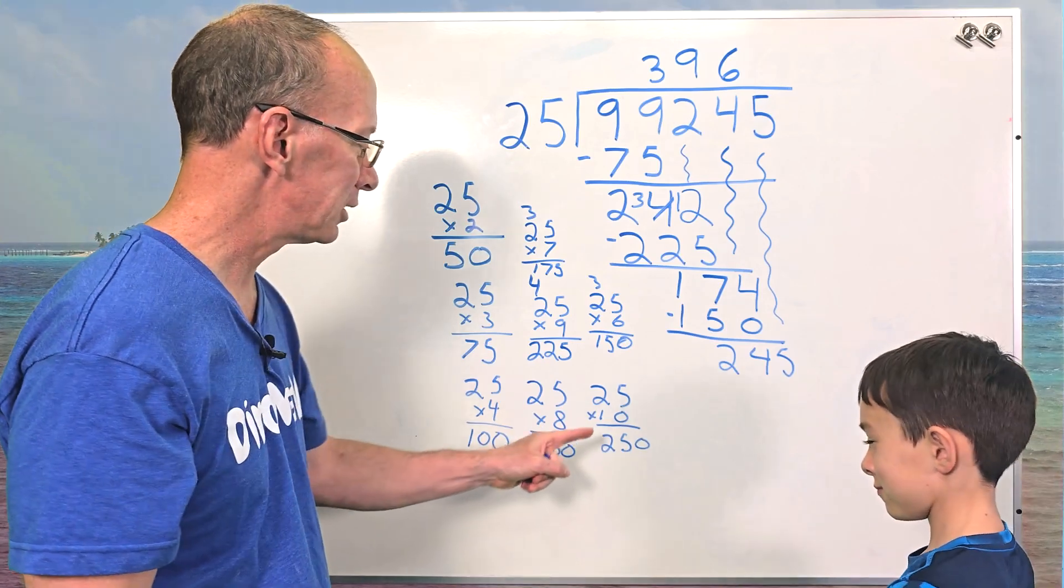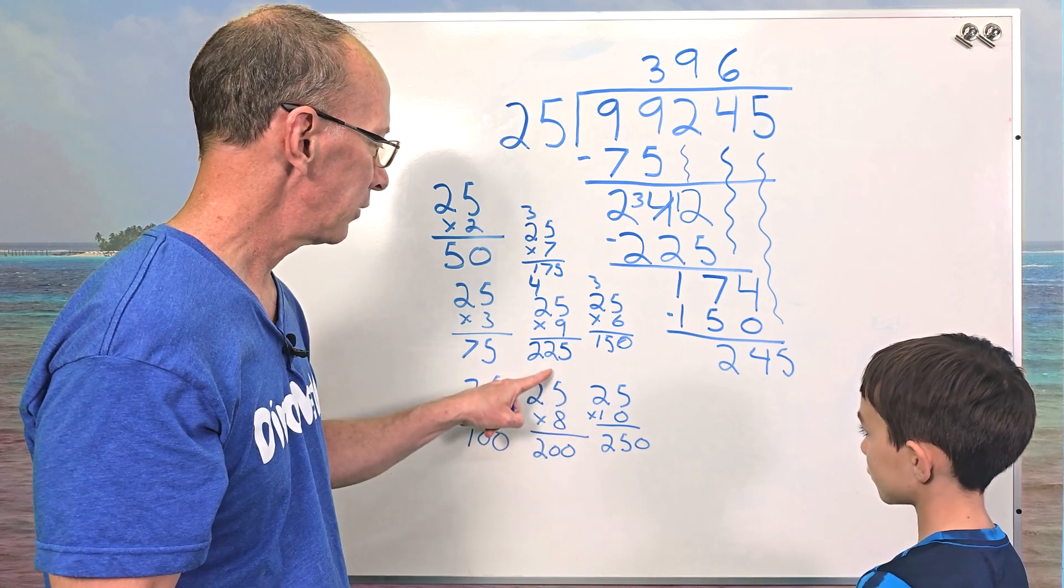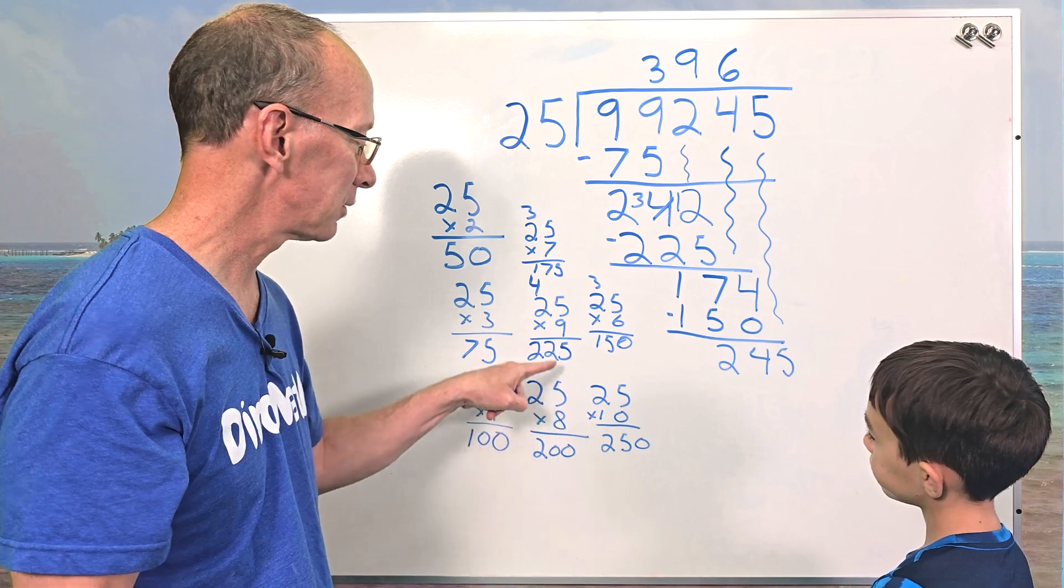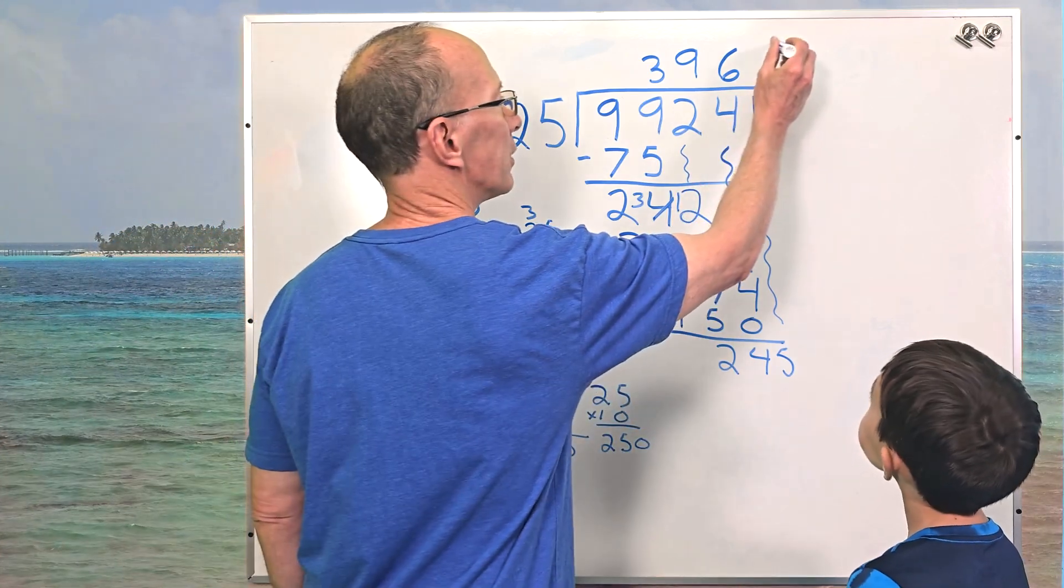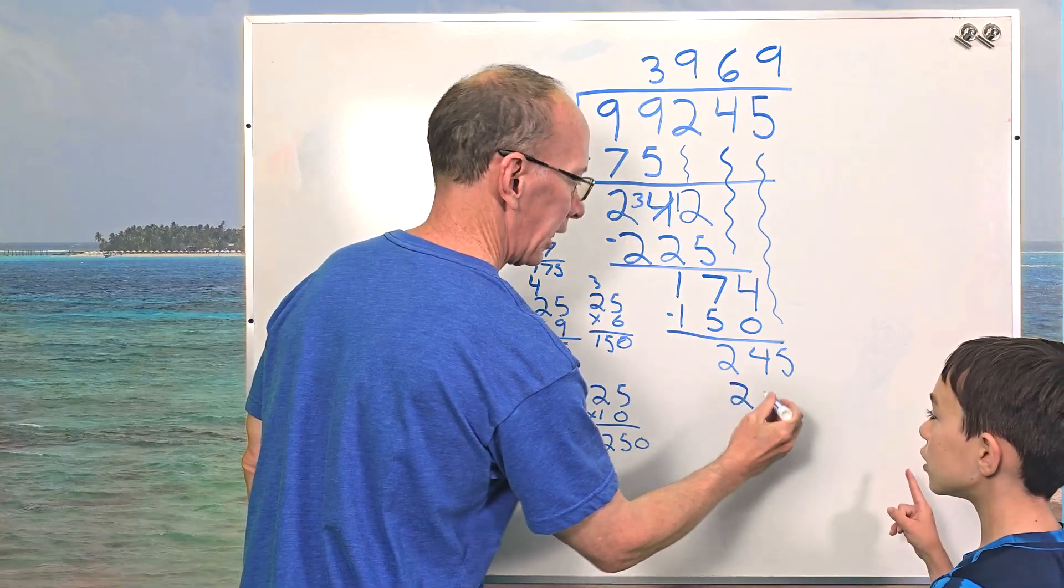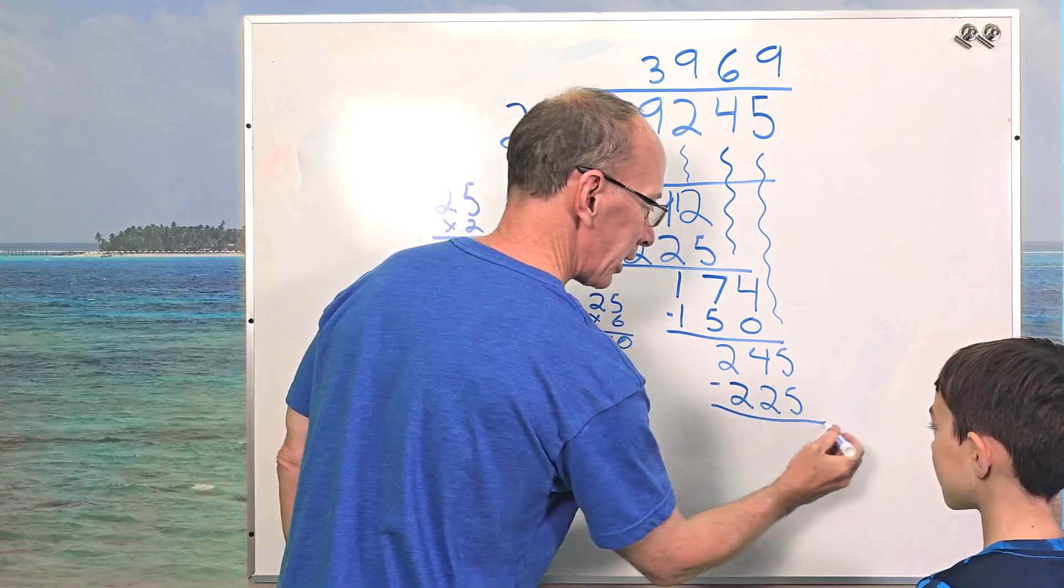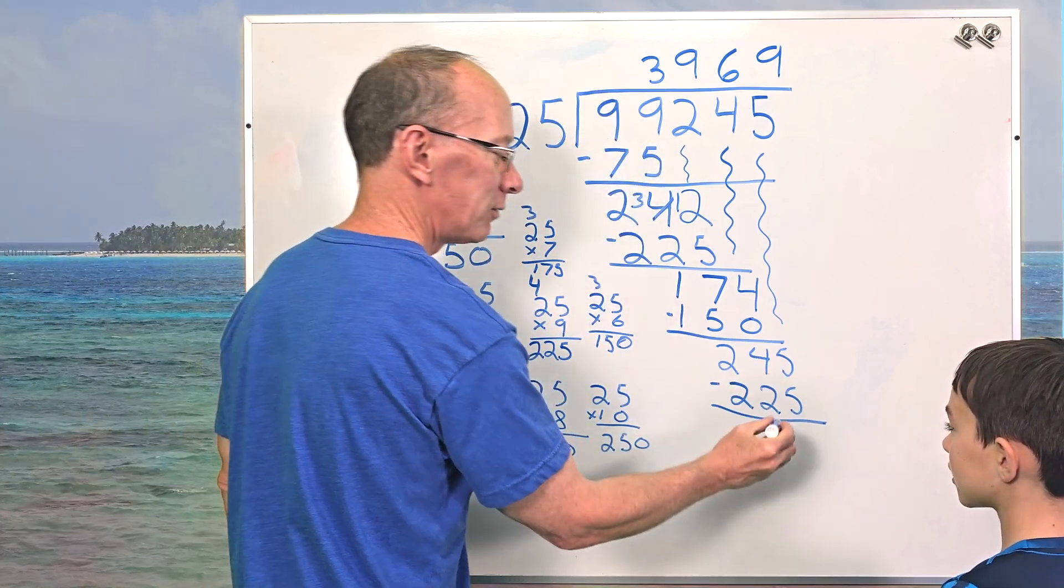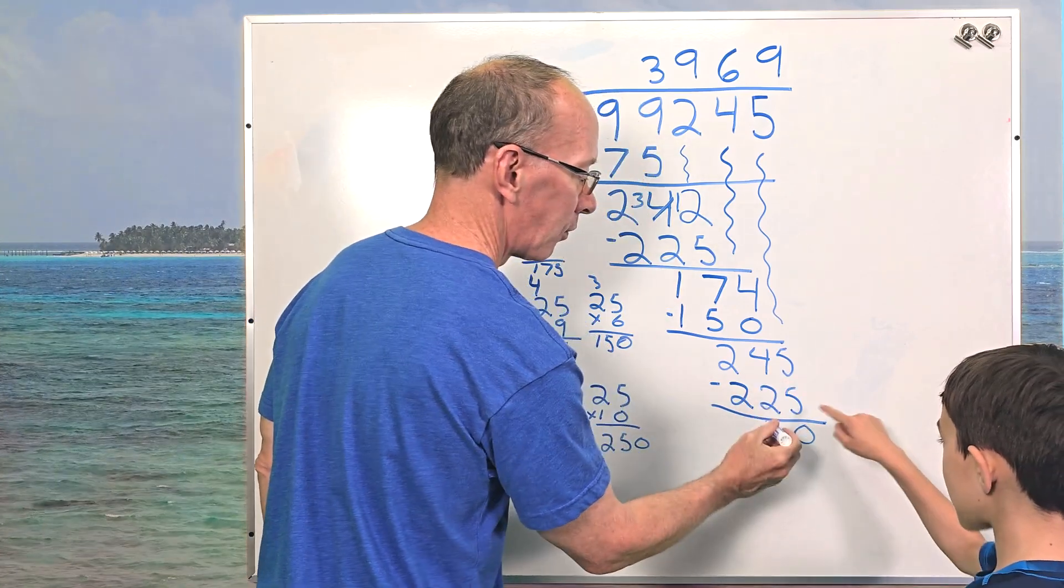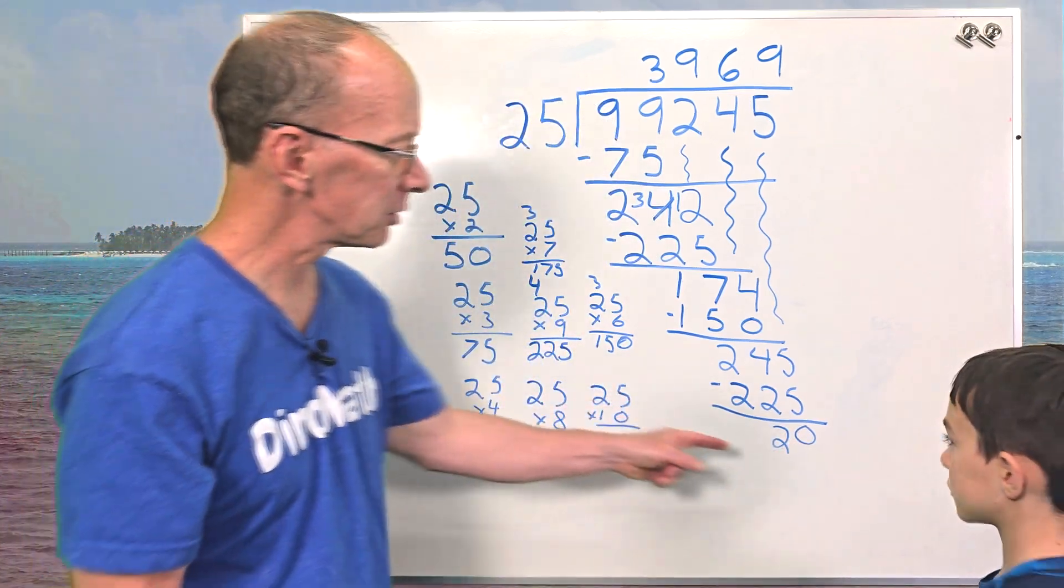So 245. What is our closest? If we did 25 times 10, that's 250. Too big. 25 times nine. All right. That's the next choice. All right. So we put a nine right over here. Nine times 25 would be. Are you sure that's going to work? I'm pretty positive, but I could make a mistake. So we'll find out if we make a mistake here. Five minus five equals zero. Four minus two equals two. And two minus two equals zero.